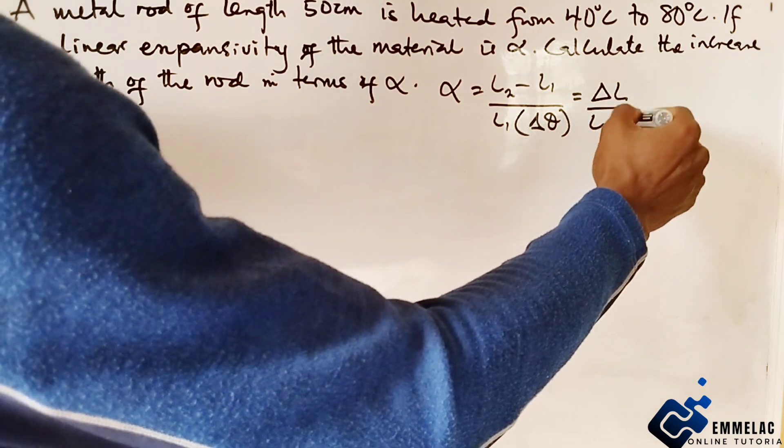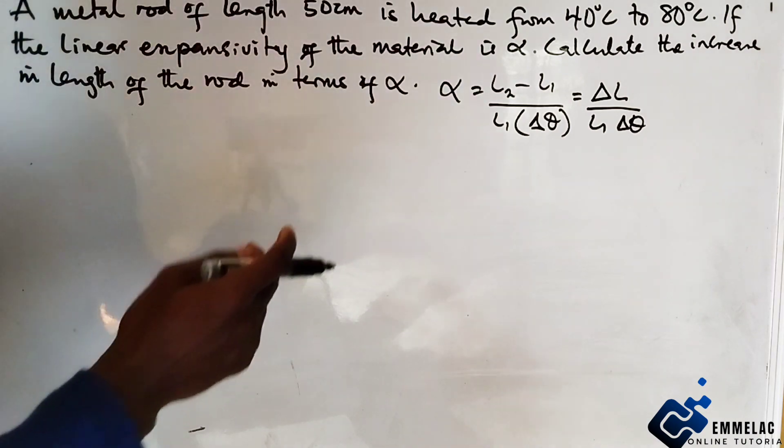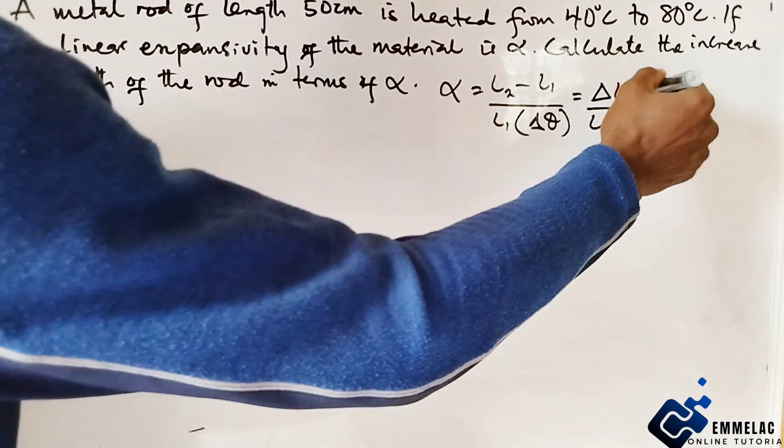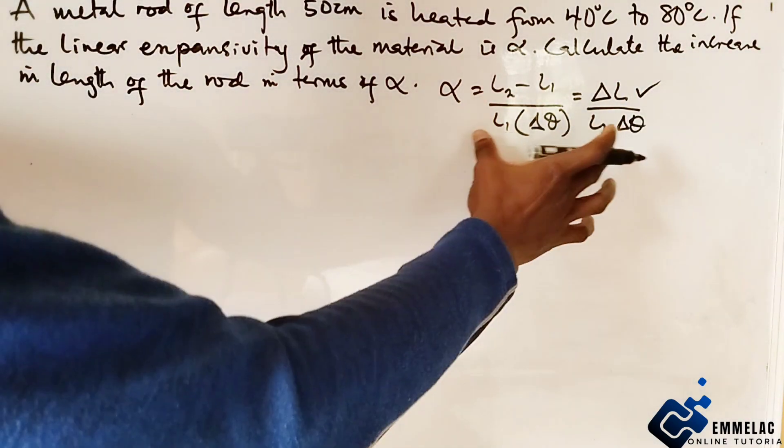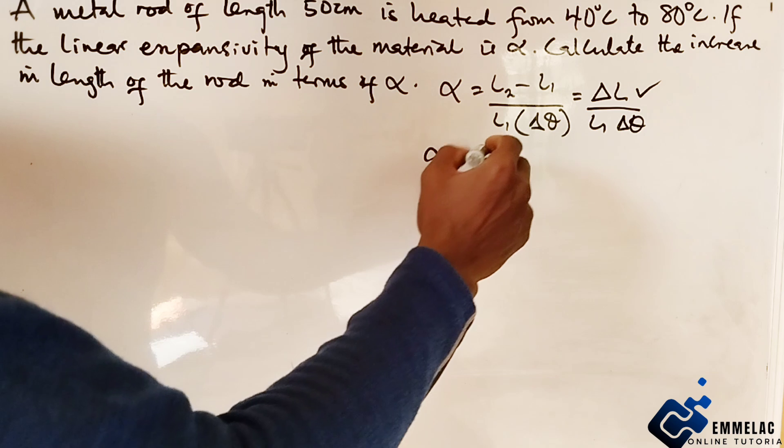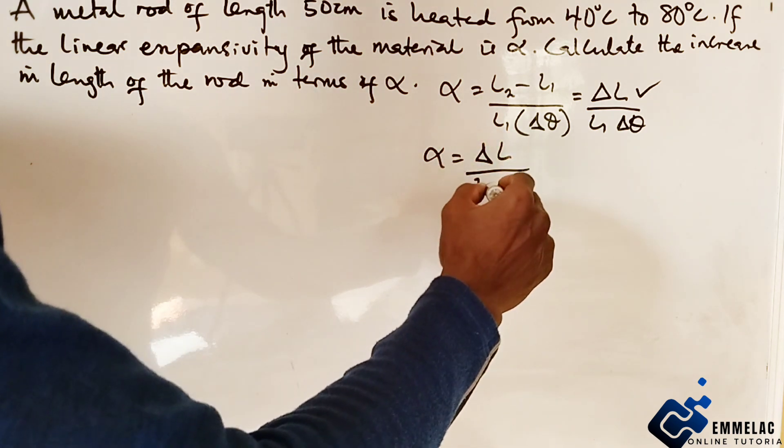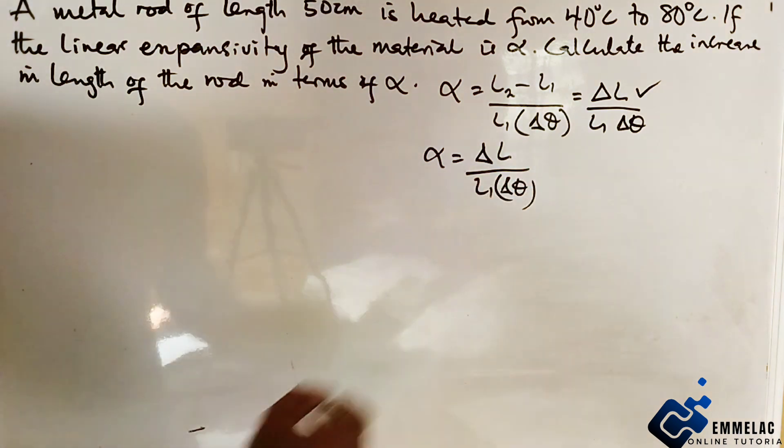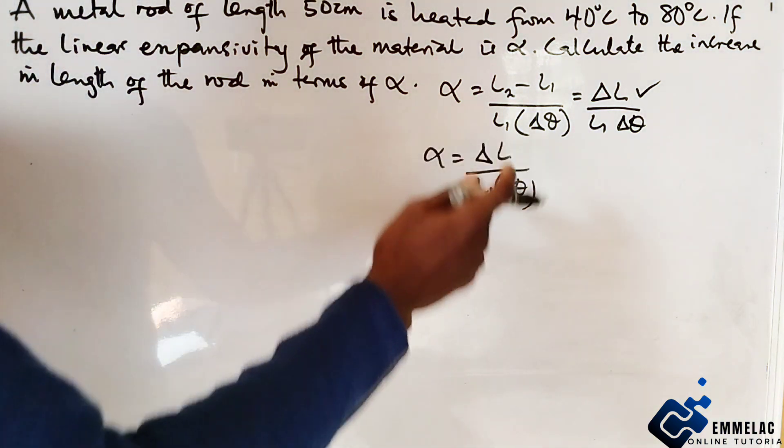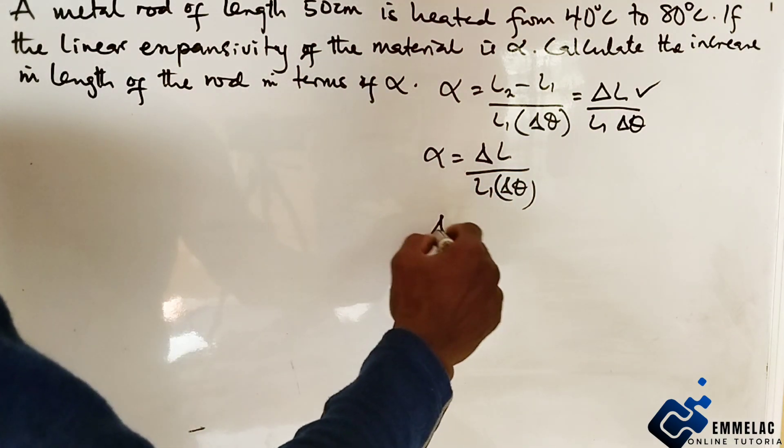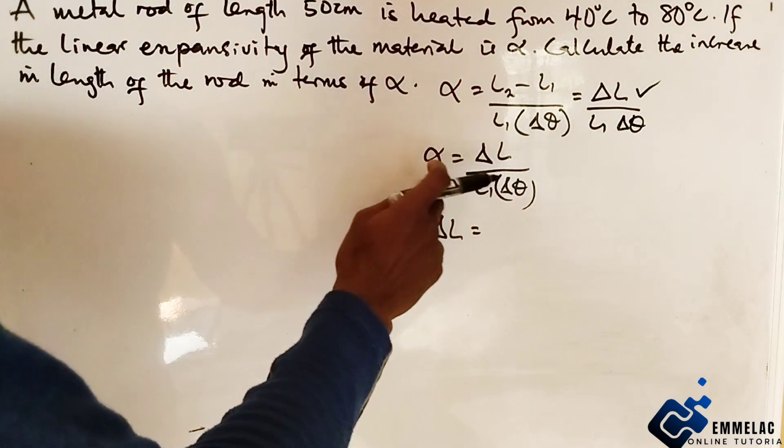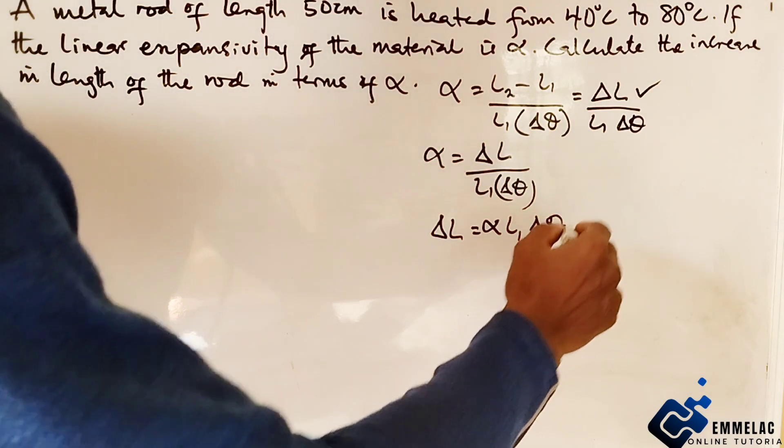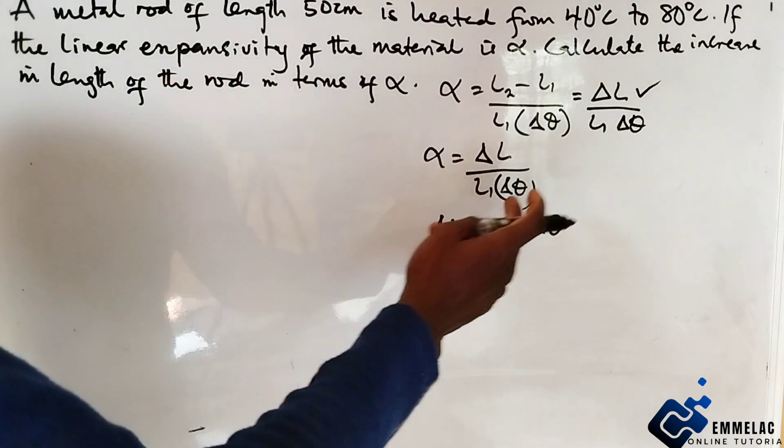We have been told to find the increase in length, which is ΔL. From this formula, we have alpha equals the increase in length over the initial length times the change in temperature. We can rearrange this formula by cross-multiplying: ΔL = alpha × L × ΔT.